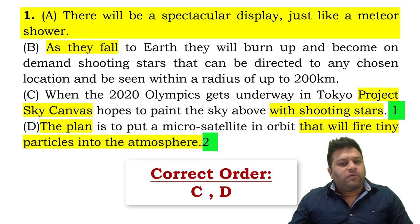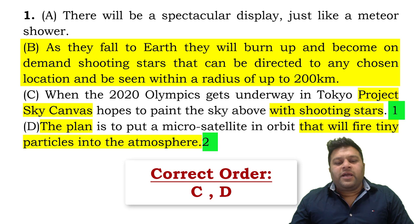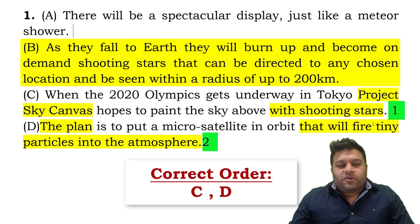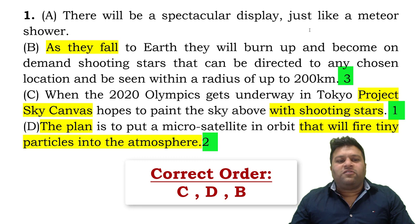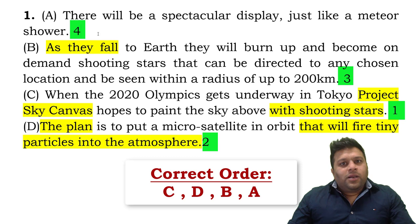After D, the next link is the tiny particles. 'As they fall to earth' — 'they' refers to the tiny particles fired into the atmosphere. So we've introduced Project Sky Canvas, explained the project with D, then linked to B: 'as they fall to earth they will burn up and become on-demand shooting stars.' Finally, the fourth sentence is A: 'there will be a spectacular display just like a meteor shower,' which is more like a conclusion.